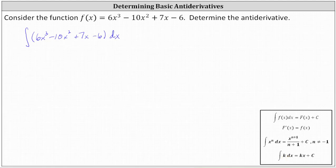To begin, we want the antiderivative of 6x³ with respect to x, which is equal to 6 times the indefinite integral of x³. Looking at the power rule of integration, notice n = 3, and therefore the antiderivative is x to the power of 3 + 1 divided by 3 + 1, or x⁴ divided by 4.